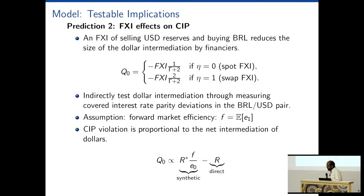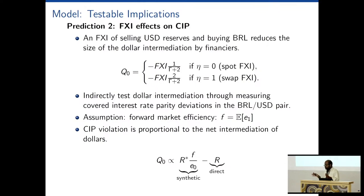For the effects on CIP: in this framework we have a UIP variable, and if we assume forward market efficiency we can link the UIP wedge to a CIP wedge. Dollar intermediation should be a function of the CIP measure. If the synthetic rate is much higher than the direct rate — so the level of CIP deviation is large — we expect more dollar intermediation. FXI should reduce the amount of dollar intermediation by intermediaries, thereby lowering the level of CIP.